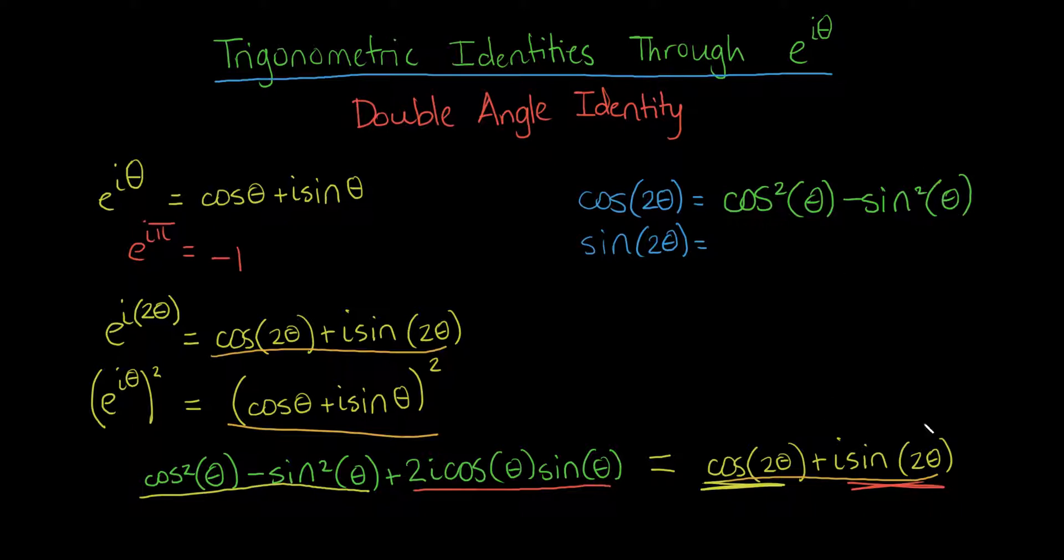And now, the imaginary part of this equation, the sine of 2 theta, times i, must equal the imaginary part of this equation. 2 cosine of theta, sine of theta, times i. So we have 2 cosine of theta, sine of theta.